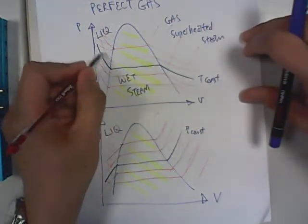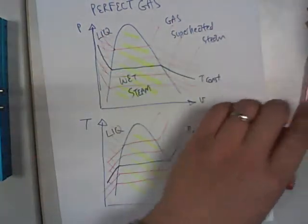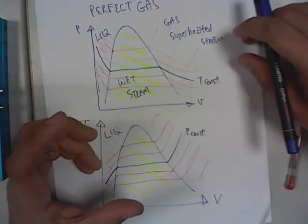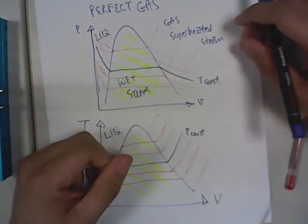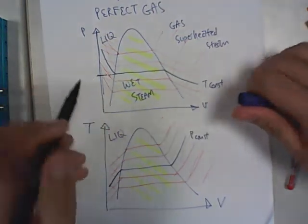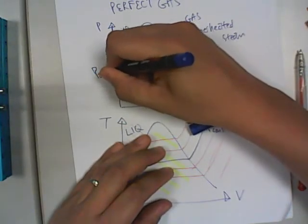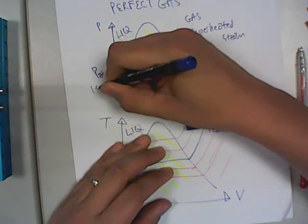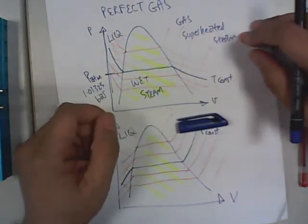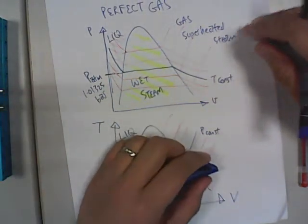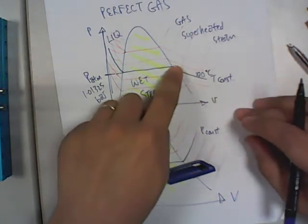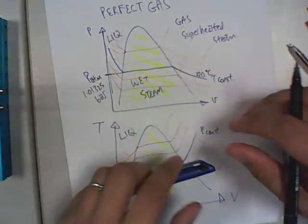By picking one line, you are looking at just one particular temperature. For example, water in a kettle before it's boiling, under atmospheric pressure — your pressure is at atmospheric, which is usually 1.01325 bar. When it boils, it boils at 100 degrees Celsius. So this line is the 100 degrees Celsius constant temperature line.